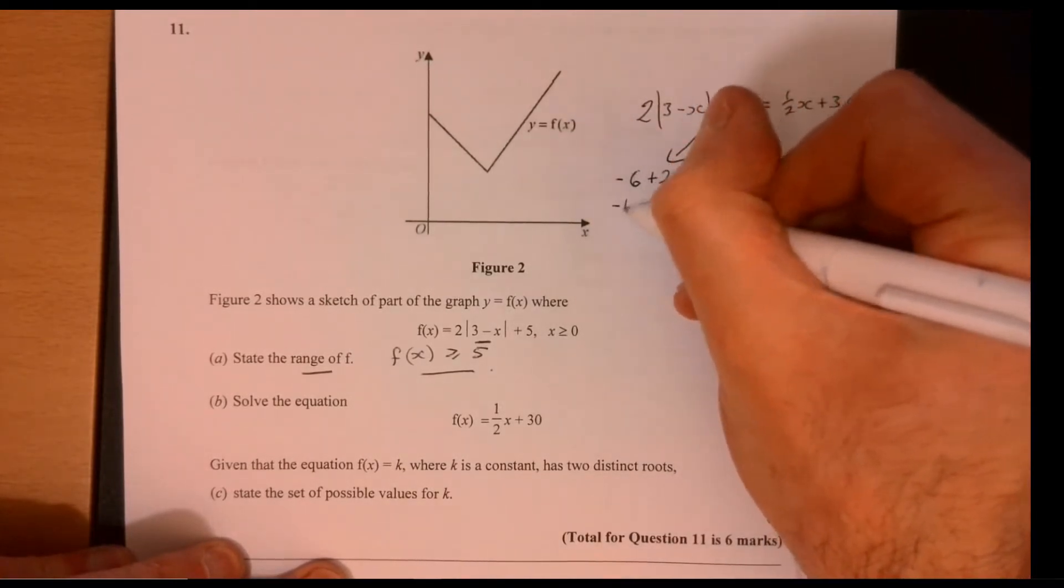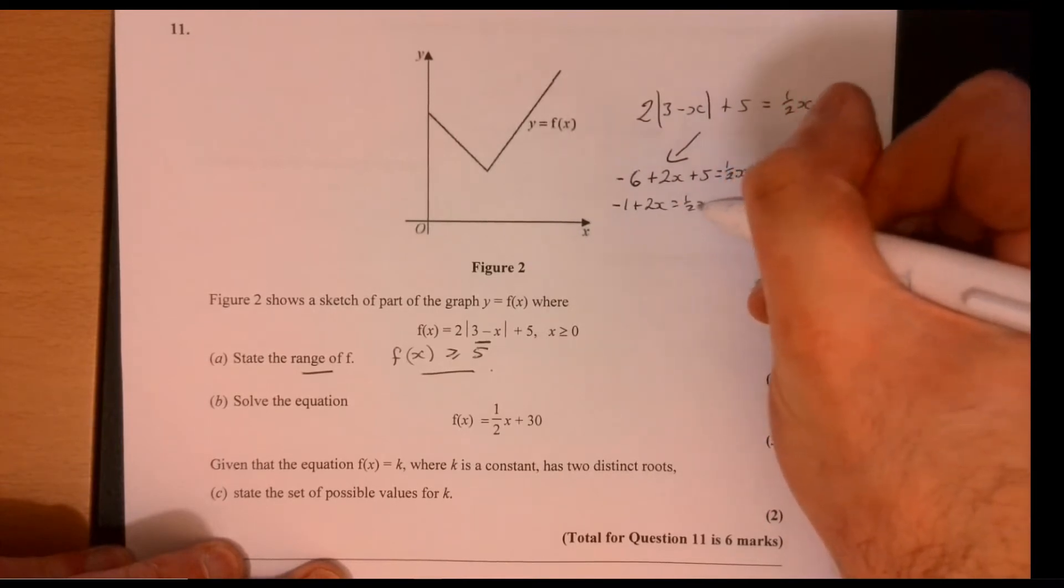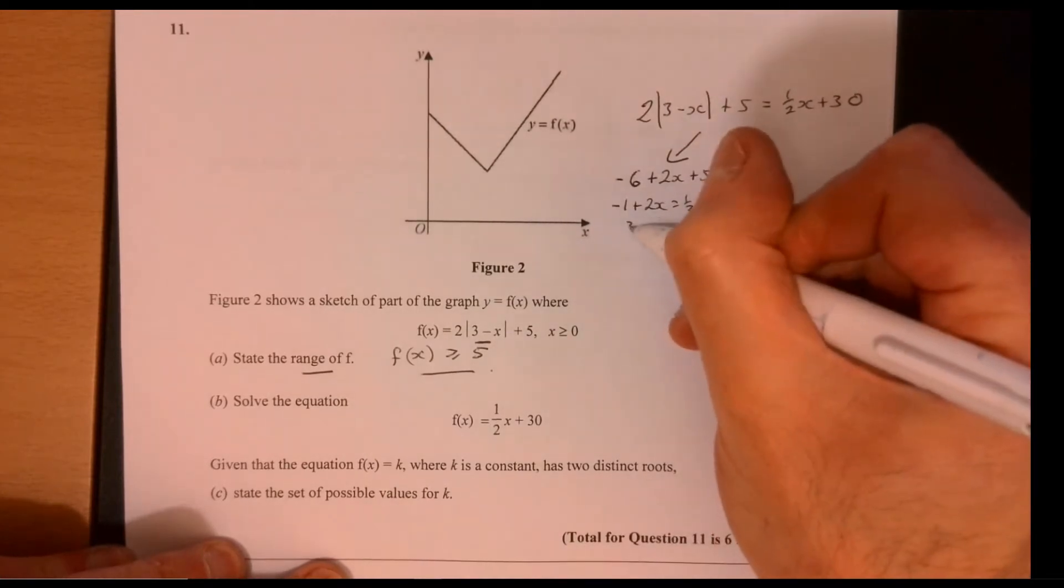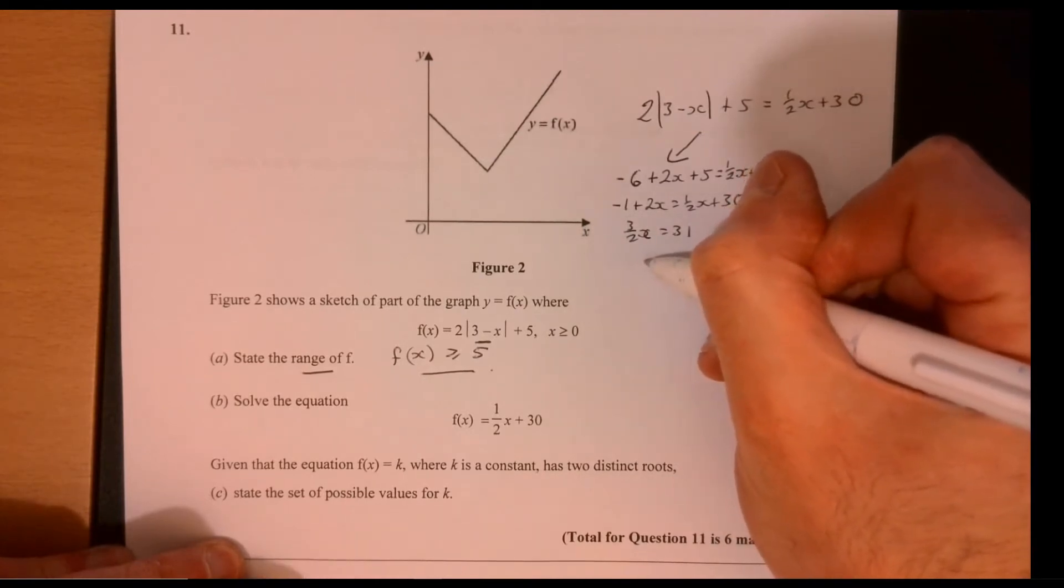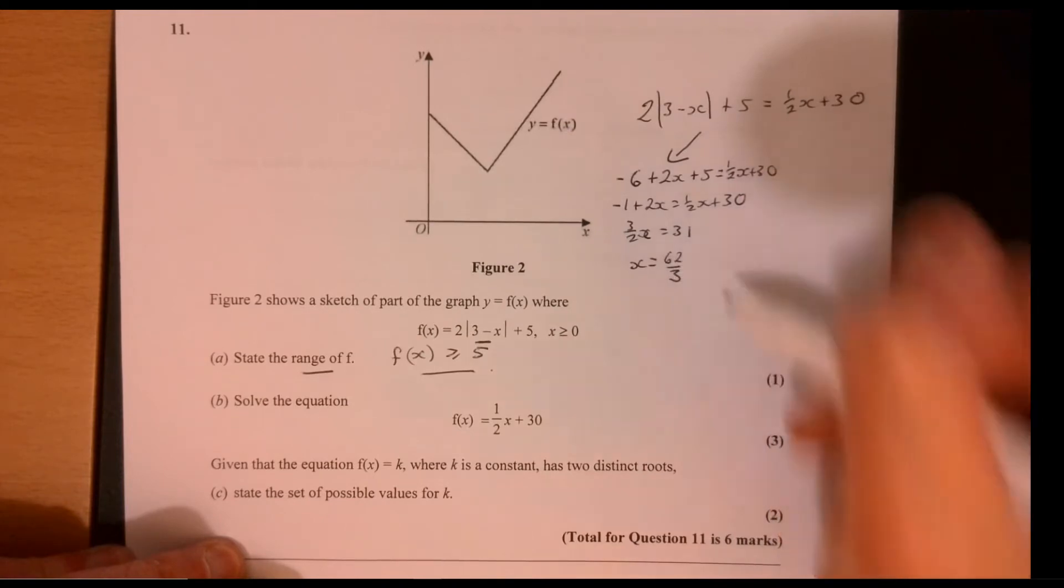So that will give me minus 1 plus 2x equals half x plus 30. And then that will give me 3 over 2x equals 31. So x must be equal to 62 over 3.